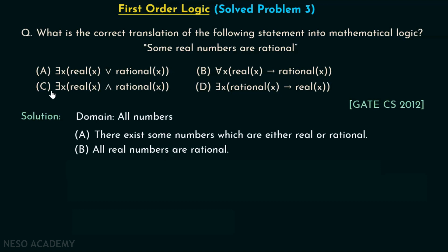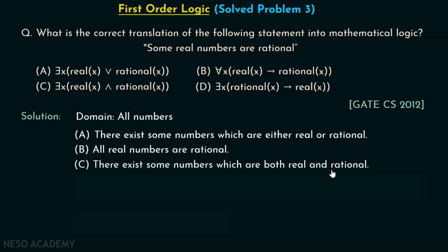Let's try to convert the logical expression given in option C: there exists x, Real(x) and Rational(x). This means there exist some numbers which are both real and rational. This is true because the original statement says 'some real numbers are rational,' which is the same as saying there exist some numbers which are both real and rational.